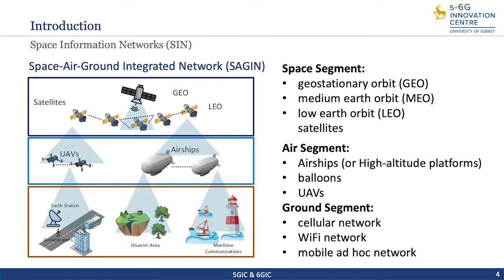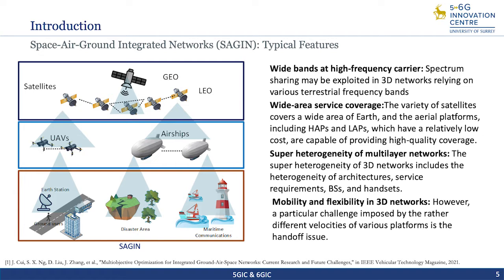With UAVs deployed in the middle of ground and space communications, shorter line-of-sight links provide a significant performance improvement over long-distance satellite links only. With the development of millimeter-wave networks, based on advanced beamforming techniques, they can potentially support air-to-air and air-to-ground connections. The diverse potential of different segments poses characteristics of potentially high bandwidth, global coverage, heterogeneity, and flexibility. For instance, wide bands at high frequency carrier — spectral sharing may be explored in 3D networks, relying on various terrestrial frequencies, as well as air-to-air, air-to-ground, and a variety of satellite frequency bands.